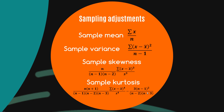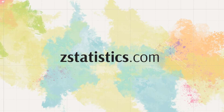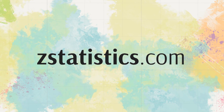To summarize: the sample mean is the sum of x divided by n; the sample variance is the sum of (x minus x̄)² divided by (n minus 1); the sample skewness involves a cubed term plus the sampling adjustment; and the sample kurtosis, as complex as it looks, is simply the standardized fourth moment adjusted for the fact that you only have a sample. That's it — the rest of the videos are up on zstatistics.com. If you like what I do, feel free to subscribe and tell your friends.